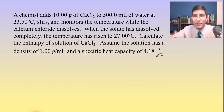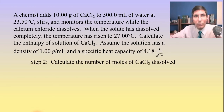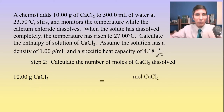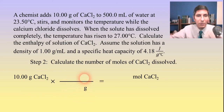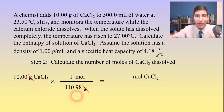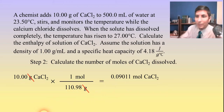The next thing to do is calculate the moles. We have 10.00 grams of calcium chloride, and we want to find out how many moles that is. We're just going to convert that to moles: on the bottom we put grams, on the top we put one mole. How many grams are in a mole of calcium chloride? It's about 110.98 grams per mole from the periodic table. When you divide, we get 0.09011 moles of calcium chloride.